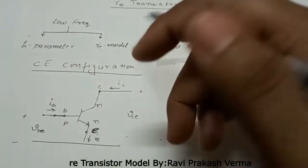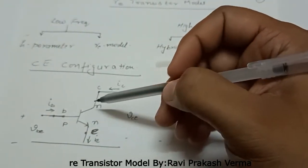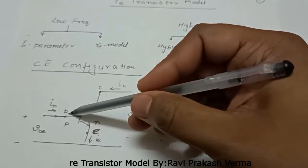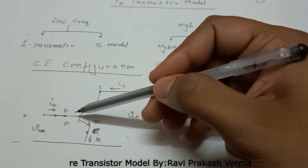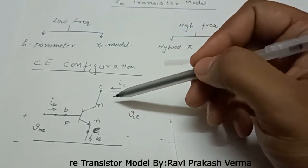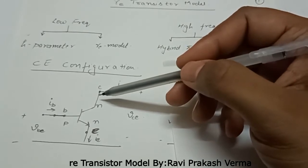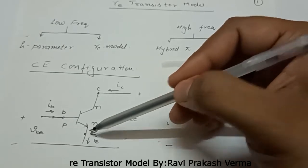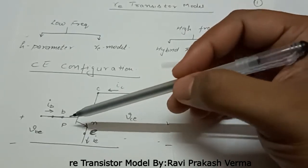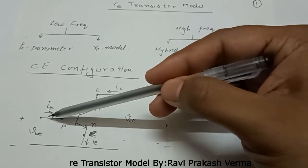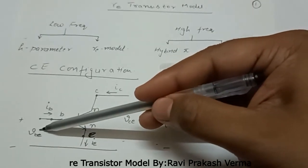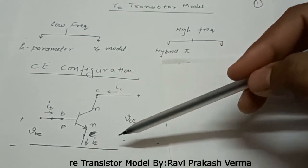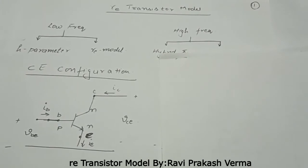I have taken a common emitter configuration transistor, which has three terminals: collector, emitter, and base. IB is the base current flowing through the base terminal, IC is the collector current flowing through the collector terminal, and IE is the emitter current flowing through the emitter terminal. VBE is the voltage between the base and emitter terminals, while VCE is the potential between the collector and emitter.